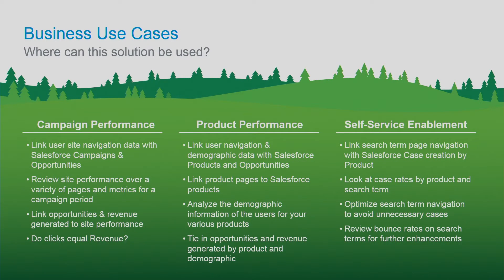Let's talk about some use cases where you can take this and run with it, thinking about this in your own business. The example we'll walk through today is campaign performance. This is the idea of taking your user data in Google Analytics, combining it with your campaign data and ultimately your opportunity data — looking at whether your campaigns are really seeing an uptick in user navigation. Where are they going on your site? And is that ultimately trickling down to revenue and opportunities being generated? Do clicks ultimately equal revenue?